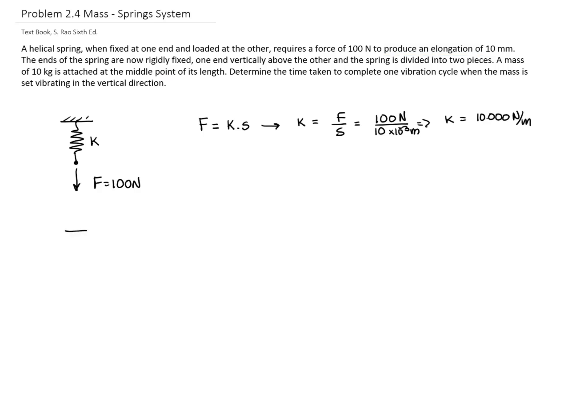The second piece of information states that I will fix my spring at both sides and I will divide the spring by two. So, the original constant of the spring is k, and I will divide my spring into two springs.